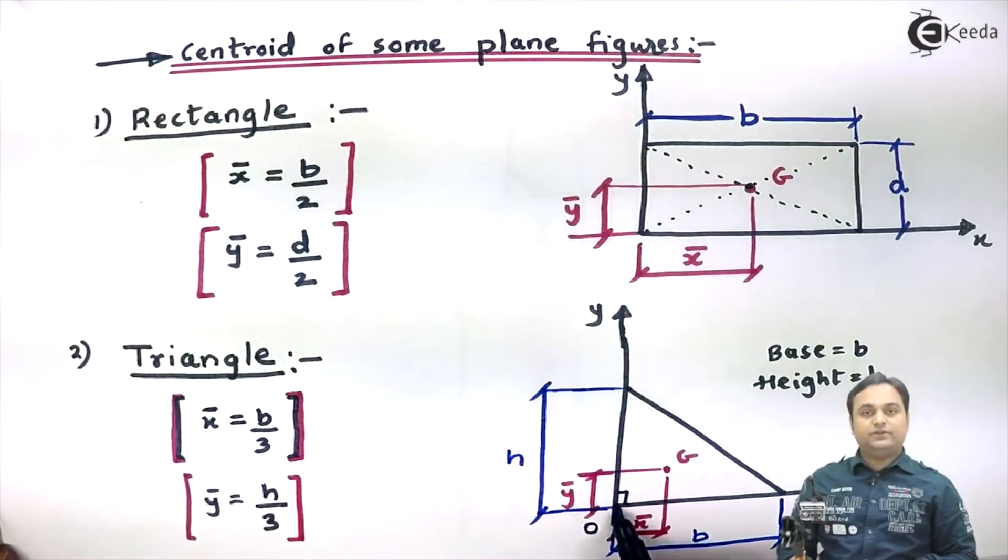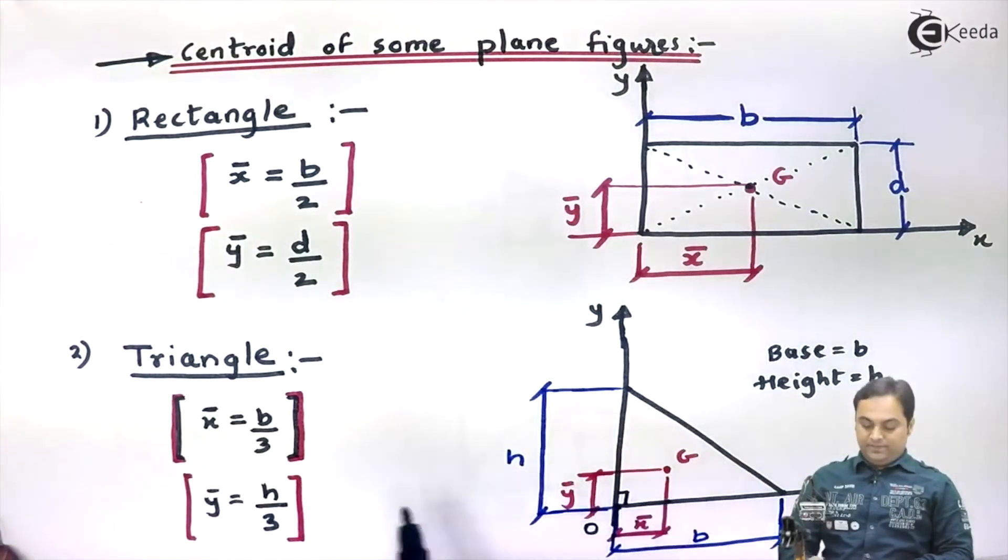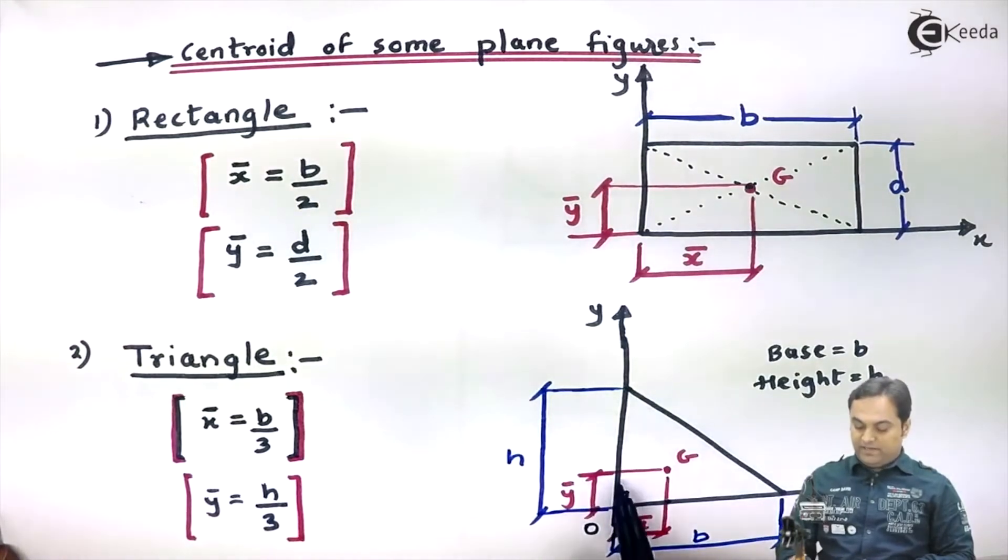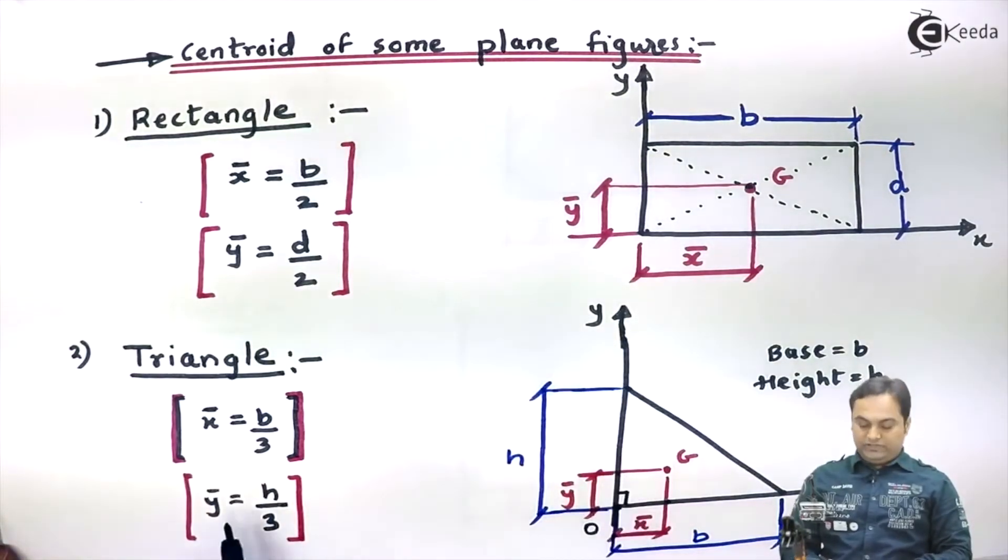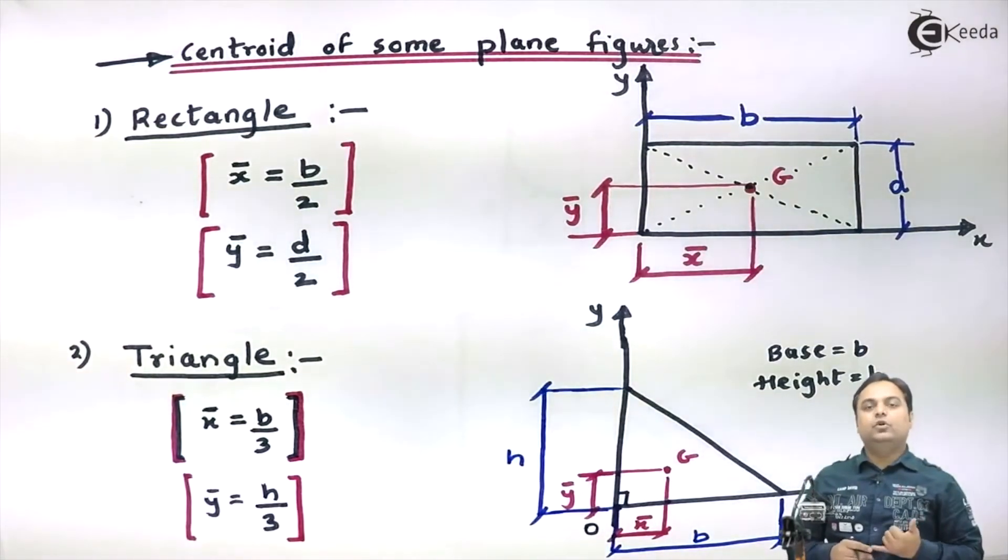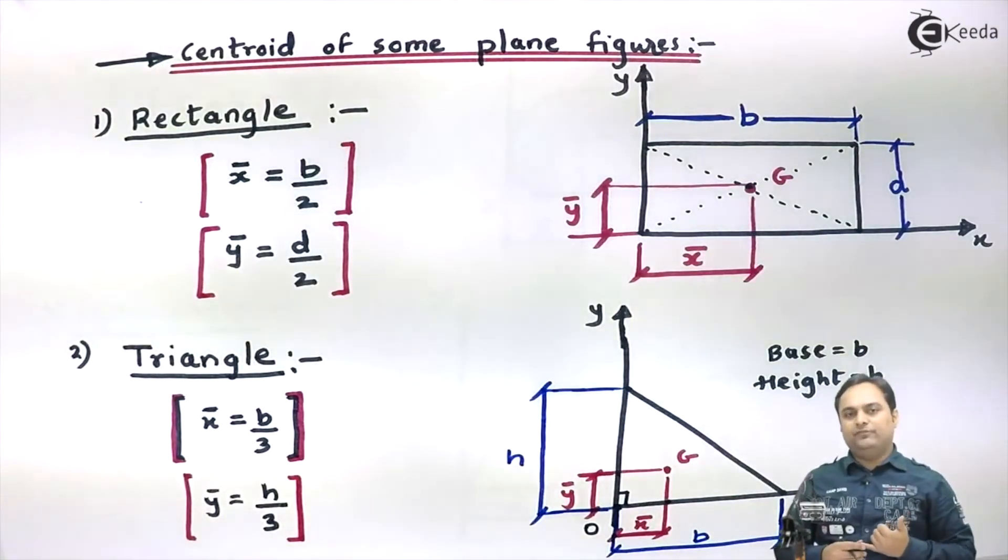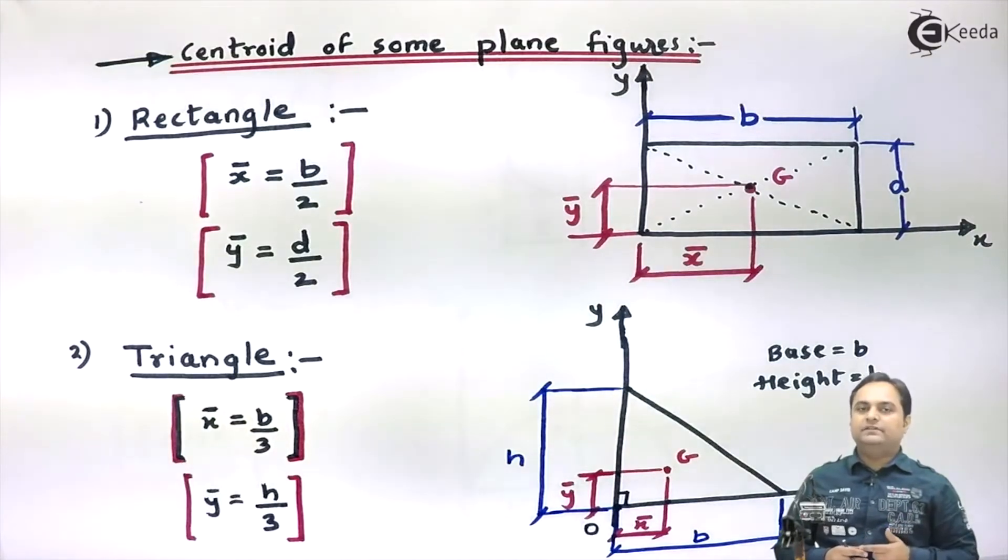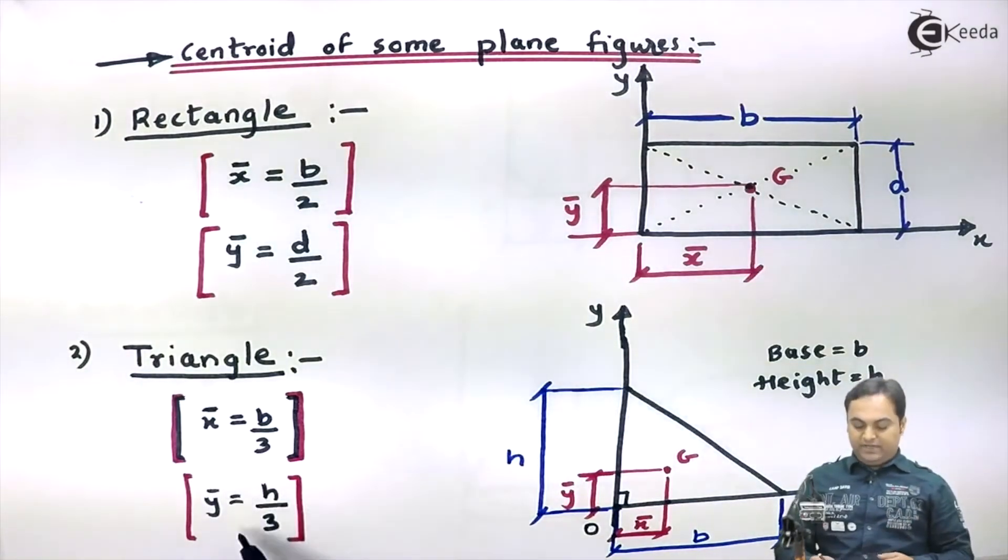Now x̄ distance will be B by 3, because if we are measuring it with respect to the base, it is B by 3 from base. And ȳ will be H by 3. So for a triangle, centroid is located at x̄ = B/3, that is one-third of base, and ȳ = H/3, that is one-third of height.